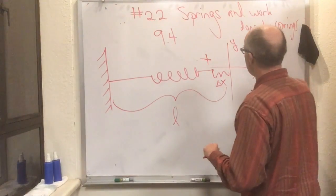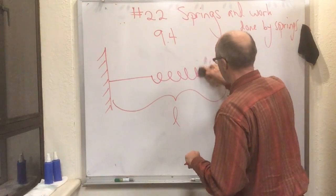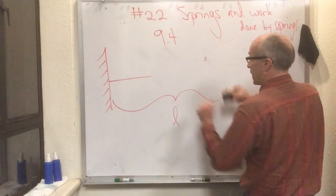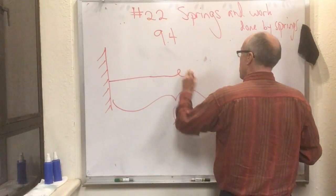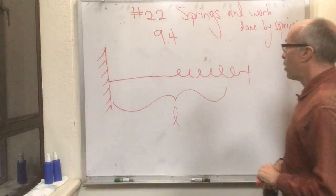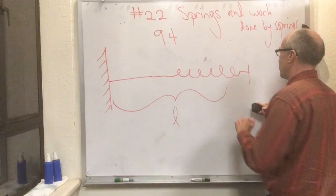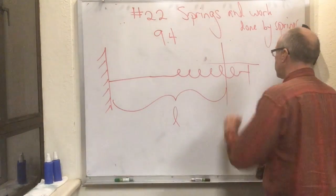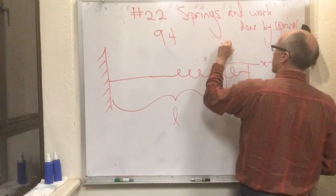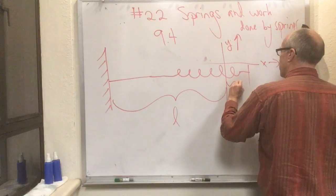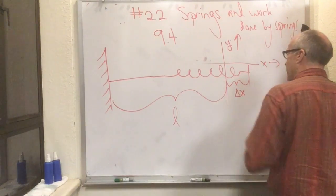In contrast, what happens if I make the spring a little bit longer than its natural length? It's been pulled out to there. Let's draw our coordinate system again. Now delta x represents a positive quantity.